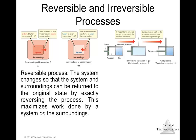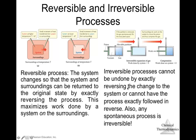An irreversible process cannot be undone by exactly reversing the change to the system, and any spontaneous process is irreversible. For example, when a partition is removed from a container, the gas expands to fill the entire volume. To return to the original state you would need to do work — a factor you didn't apply in the forward process — so this is an irreversible process.